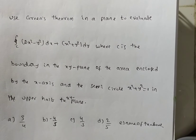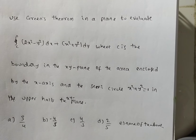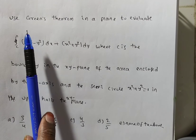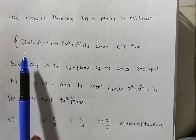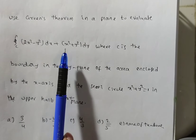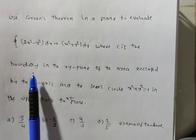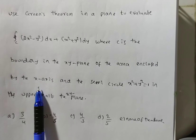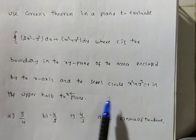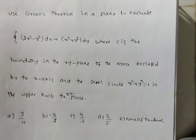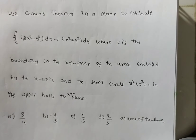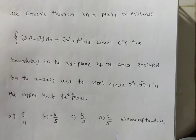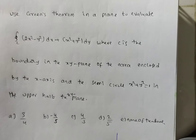Hi friends, in this video we are solving a problem on Green's theorem, a topic from vector integral calculus. The given problem is: use Green's theorem in a plane to evaluate the integral over C of (2x² - y²)dx + (x² + y²)dy, where C is the boundary in the xy-plane of the area enclosed by the x-axis and the semicircle x² + y² = 1 in the upper half of the xy-plane.